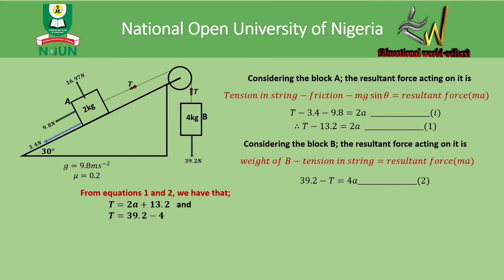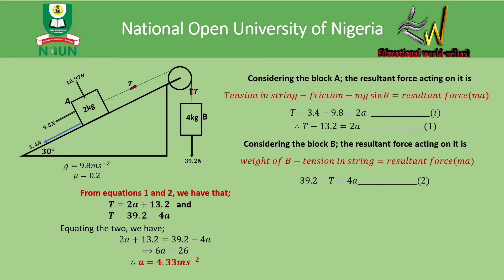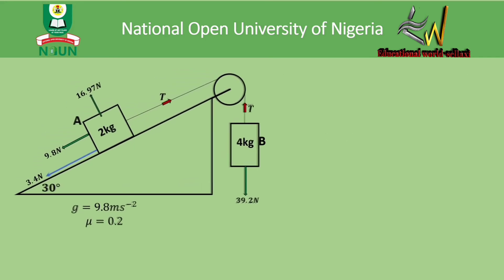From equations one and two: T = 2a + 13.2 and T = 39.2 − 4a. Equating the two: 2a + 13.2 = 39.2 − 4a. Collecting like terms and simplifying gives a = 4.33 m/s². This means block A moves up the inclined plane with an acceleration of 4.33 m/s², and block B falls with the same acceleration of 4.33 m/s².